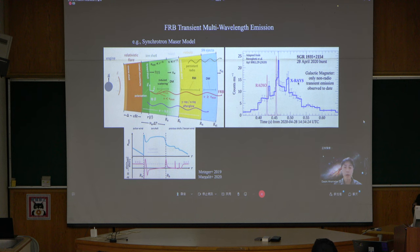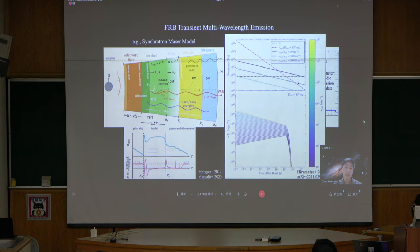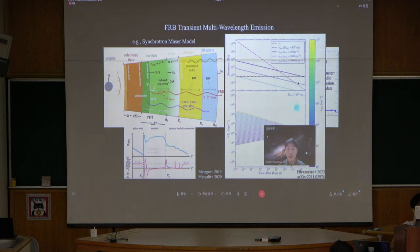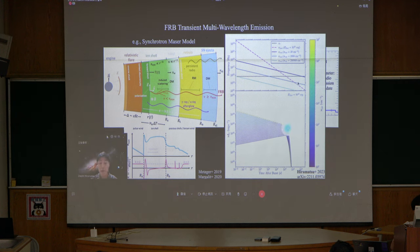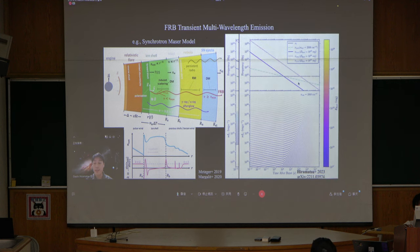What we can do with the optical. From this model I'm showing, if we fix the flare energy to this value, and if you change the external density, that's how the light curves are color-coded. You can get light curves with duration up to 1000 seconds or so.